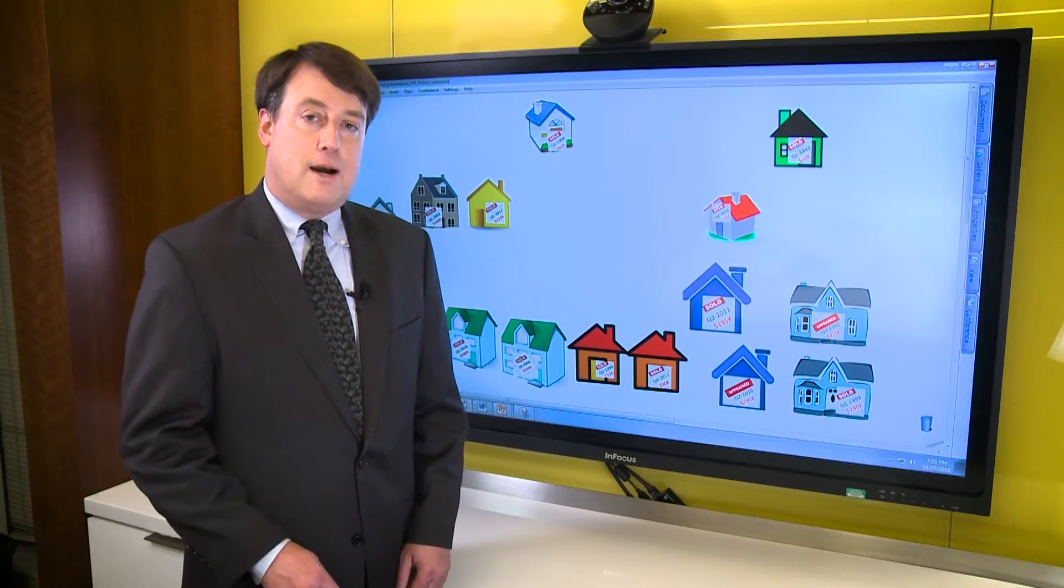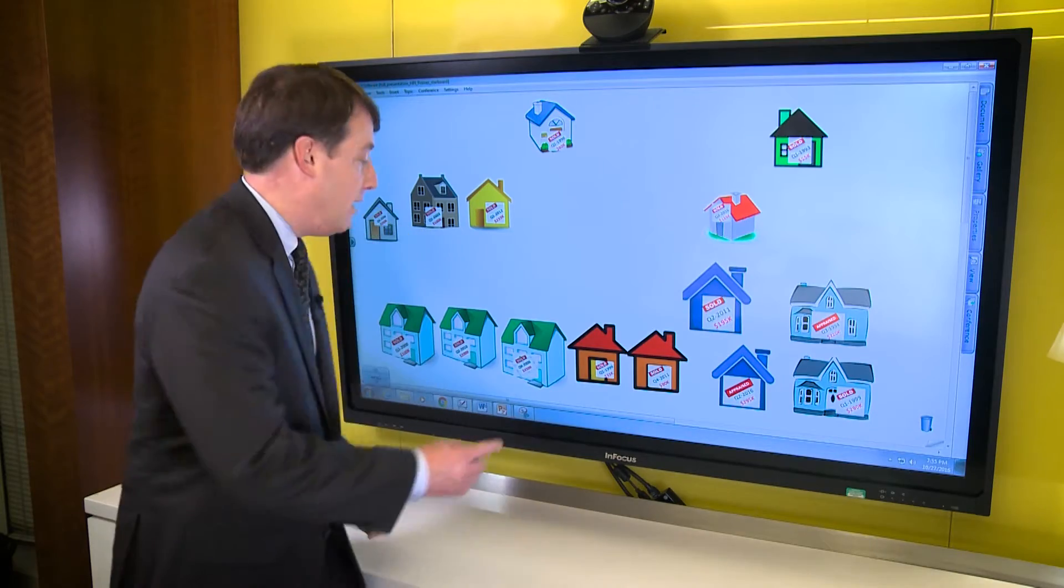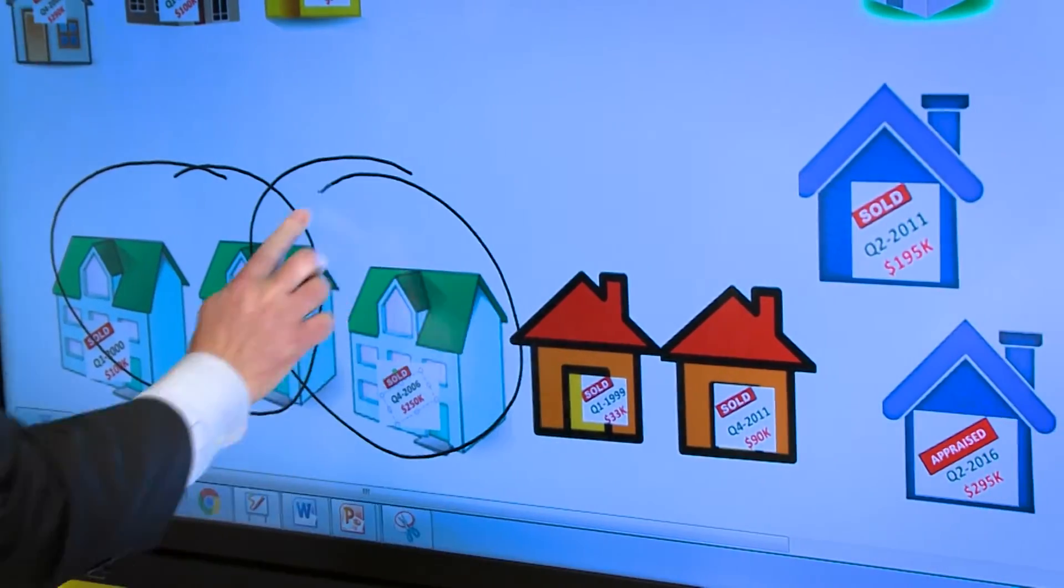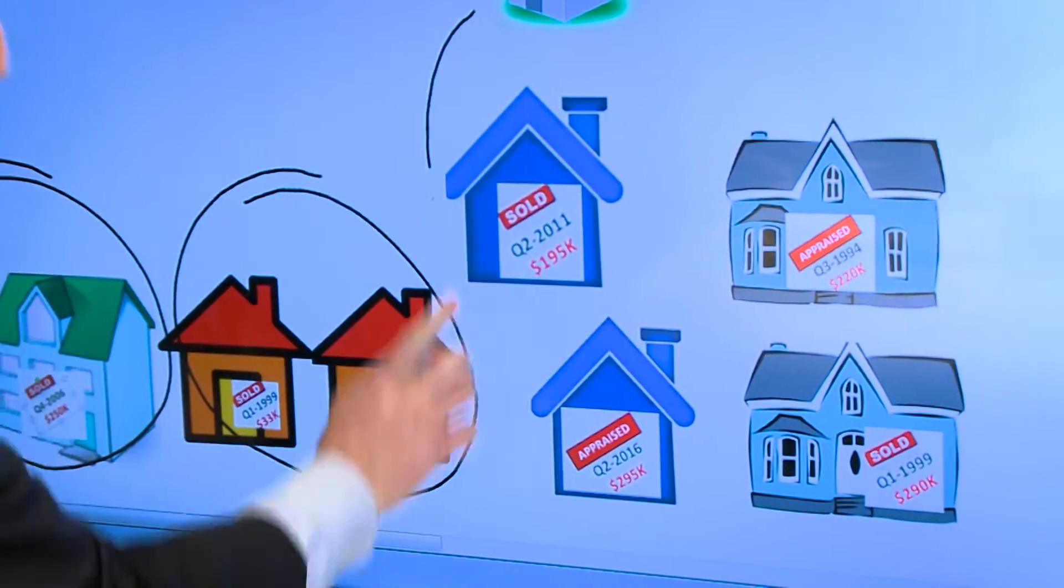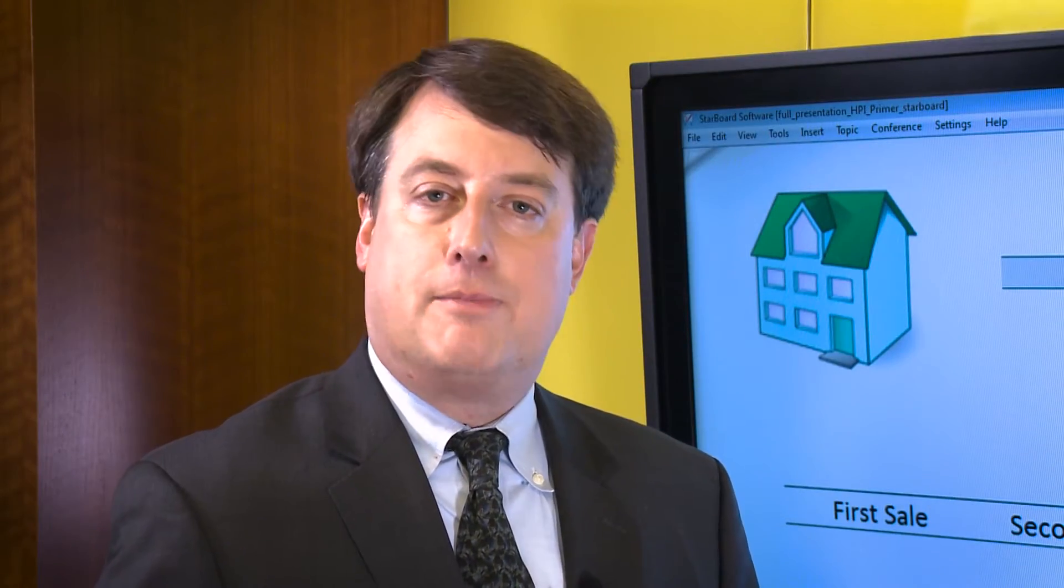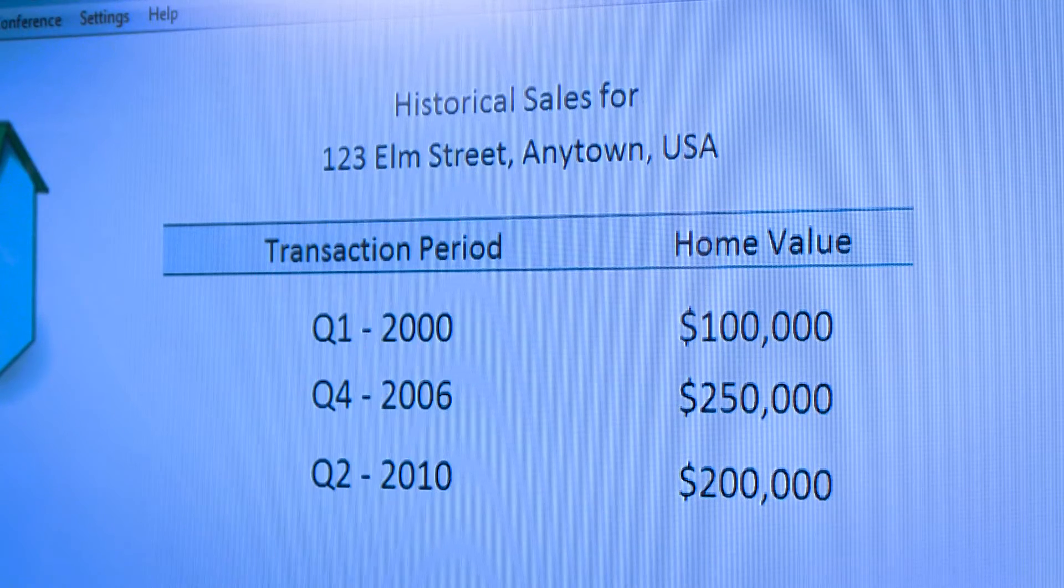Once we find properties with multiple transactions, we assemble transaction pairs. These show the price change that was observed over a specific interval for the same property. For instance, if in our database we see a property that sold three times, in this case we'll call it 123 Elm Street, Anytown, USA, we would construct two pairs.